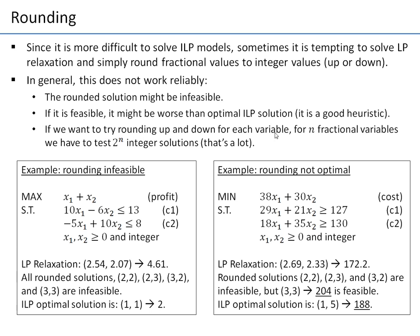If you have many variables, the rounding problem itself becomes quite time-consuming. If I have two variables there aren't many options — I can round both up, both down, or one up and one down, giving four options. But if you have n fractional variables — say 10, 20, 50, or 100 — you might have to test 2 to the power of n integer solutions, because for every variable you have two options: up or down.